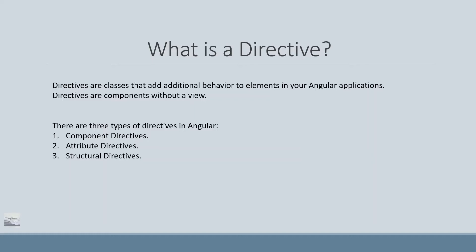Directives are basically components without a view. There are three types of directives in Angular: component directives, attribute directives, and structural directives. For component directives and attribute directives, you're already familiar if you are following our tutorials.